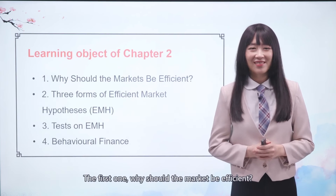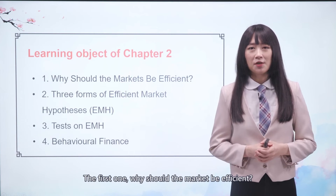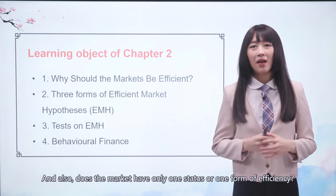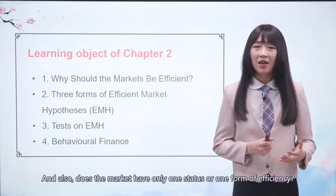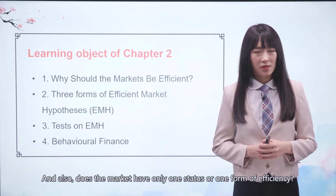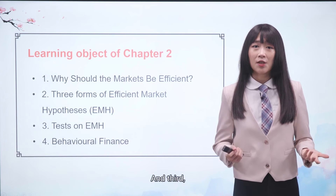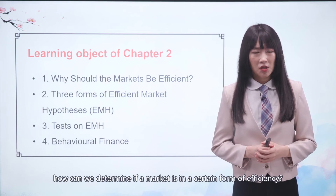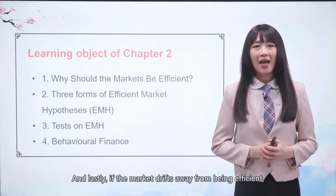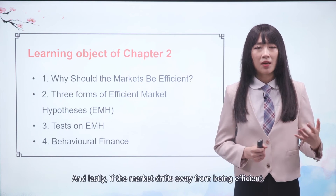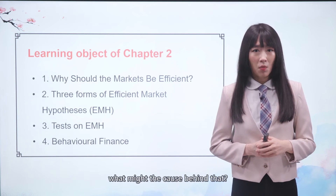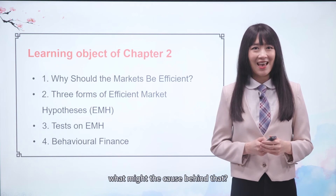The first question: why should the market be efficient, and why is that important? Does the market have only one status or one form of efficiency? Third, how can we determine if a market is in a certain form of efficiency? And lastly, if the market drifts away from being efficient, what might be the cause behind that?